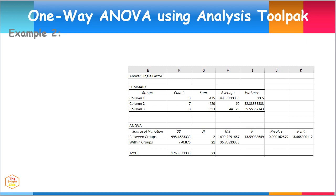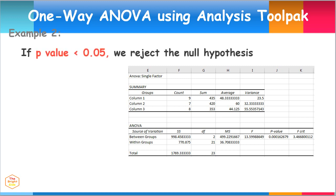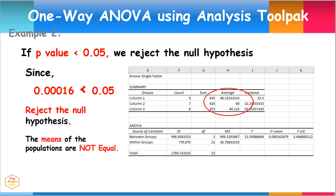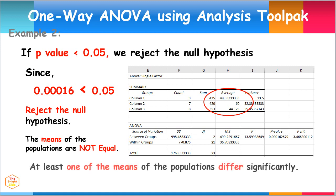Another method is determining whether the P-value is less than 0.05, which is the alpha value. If this is the case, then one must reject the null hypothesis. This is the case, since 0.00016 is less than 0.05. Therefore, we reject the null hypothesis. We can conclude that the means of the three populations are not equal, and at least one of the means differs significantly.